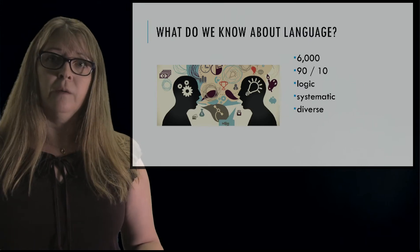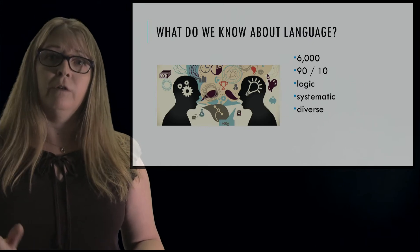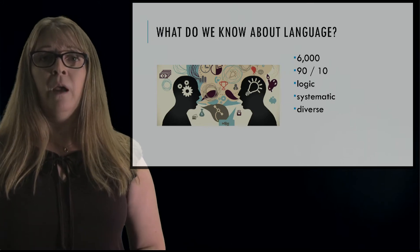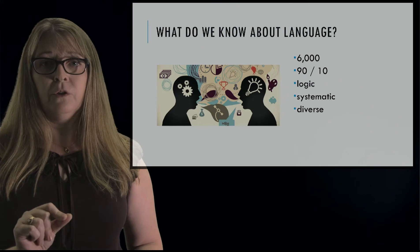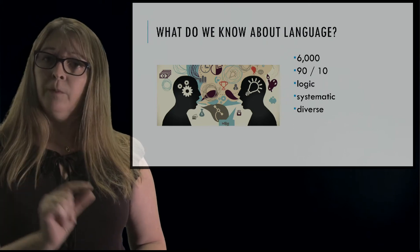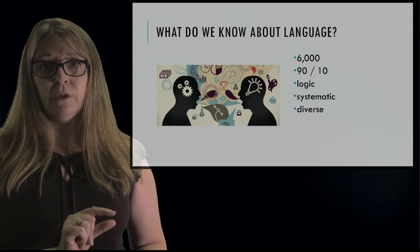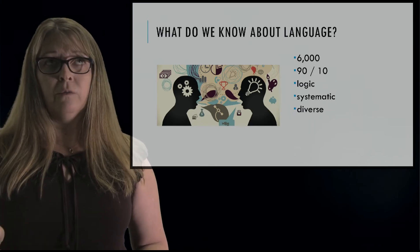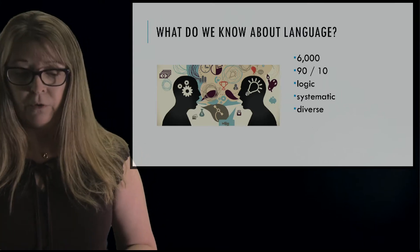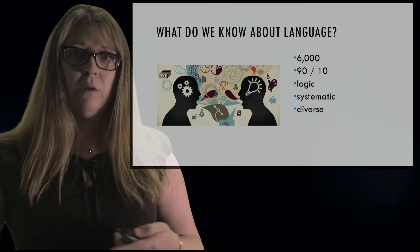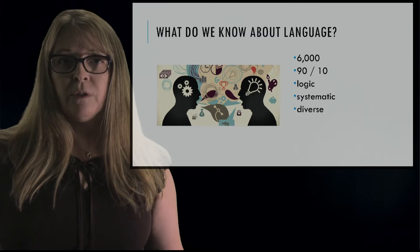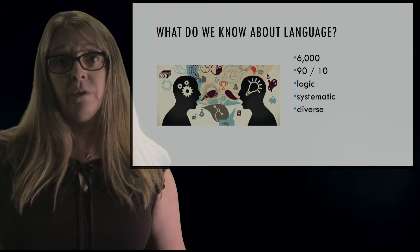Systematic — I'll give you an example. Every language has a certain number of sounds. Also, every language has a word order: either subject-verb-object, or object-subject, or subject-object-verb. Those are all different systems, even though they're diverse systems.